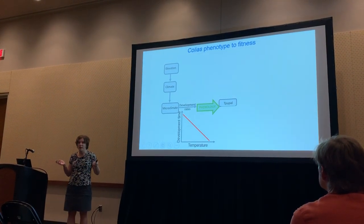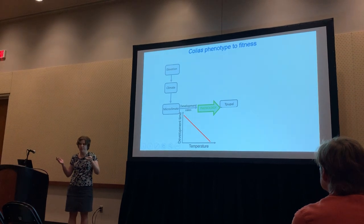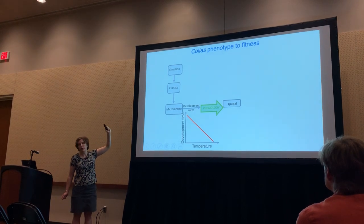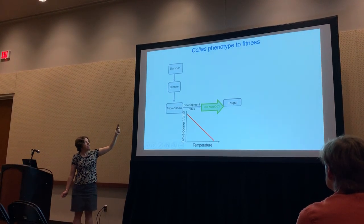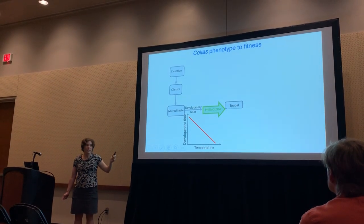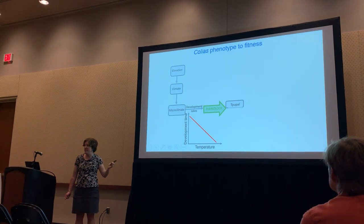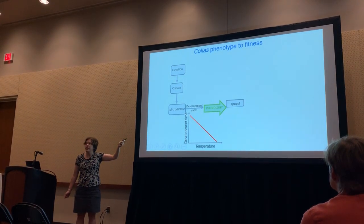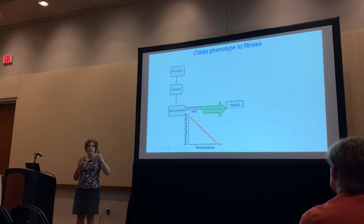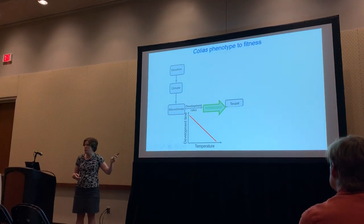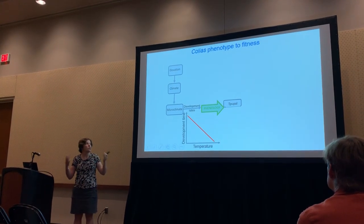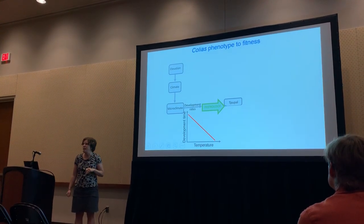Let's walk through this mechanistic model for Coleus to integrate from phenotype to fitness. At a given elevation, we use gridded climate data and run microclimate models to translate to the climate relevant to organisms. We use lab estimates of development time as a function of temperature to estimate development rates, which also gives us estimates of phenology. These environments are so variable that environmental tracking through phenology is unlikely to play a big role in mediating the interaction of plasticity and evolution.